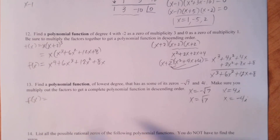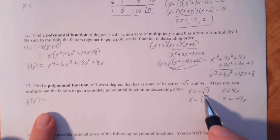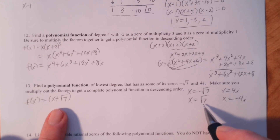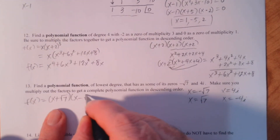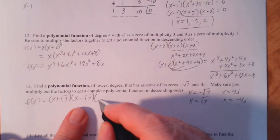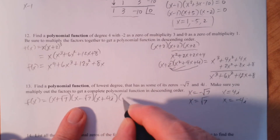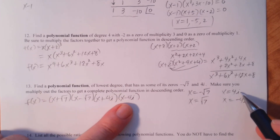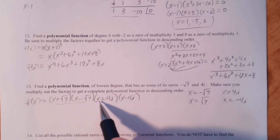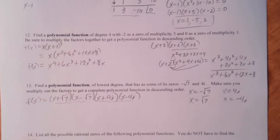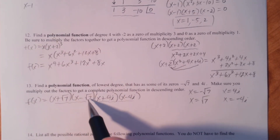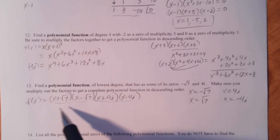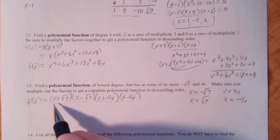Imaginary zeros and irrational zeros come in conjugate pairs. Now we can write the corresponding factors. If negative square root of 7 is a zero, then x plus square root of 7 is a factor. If square root of 7 is a zero, then x minus square root of 7 is a factor. Similarly, we'll have x plus 4i and x minus 4i. When you do these multiplications, you want to multiply your conjugates first. The nice thing is the inner and outer products add up to zero.